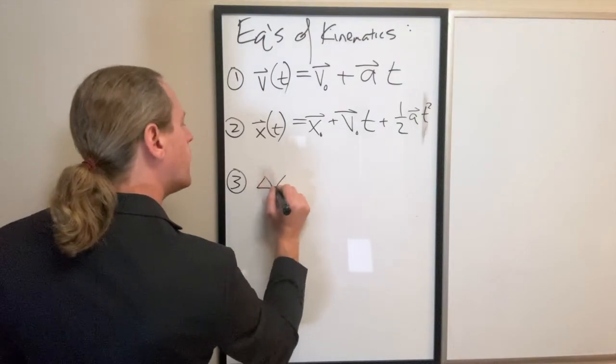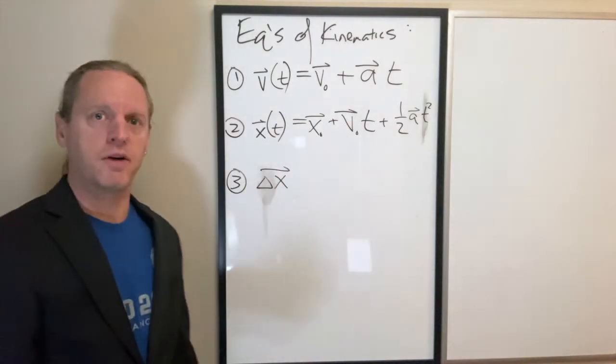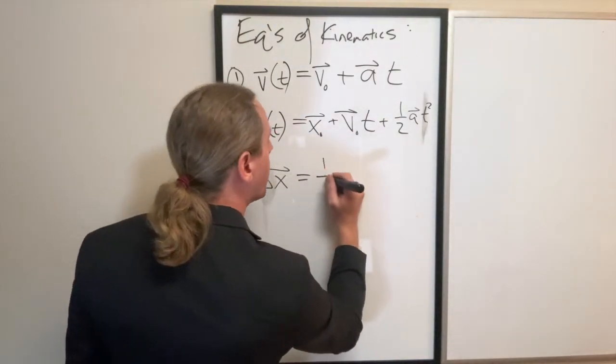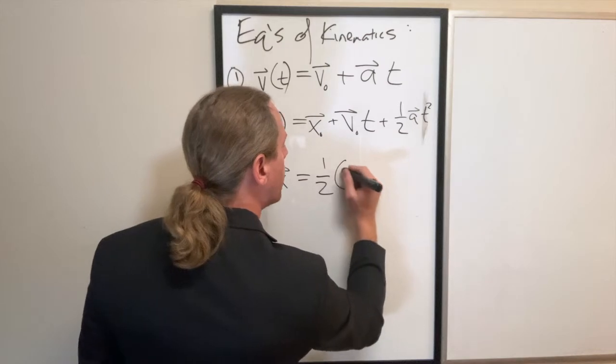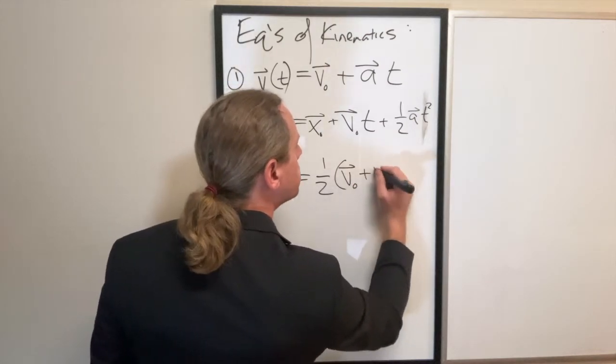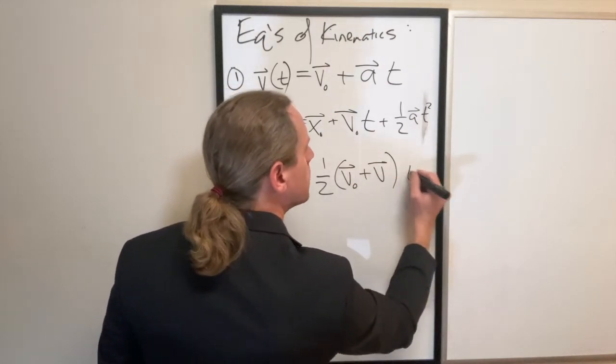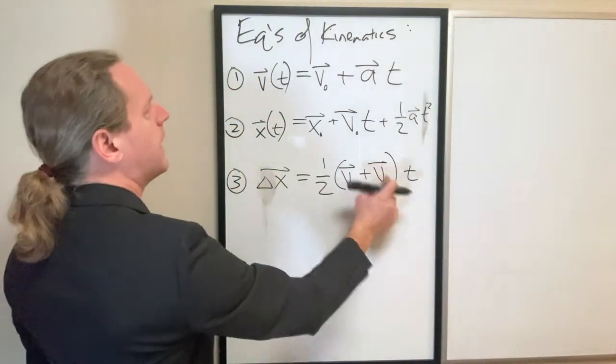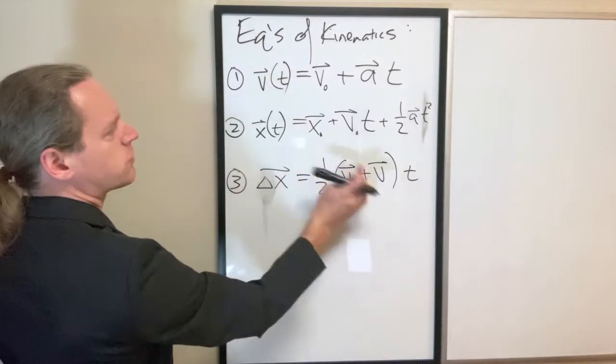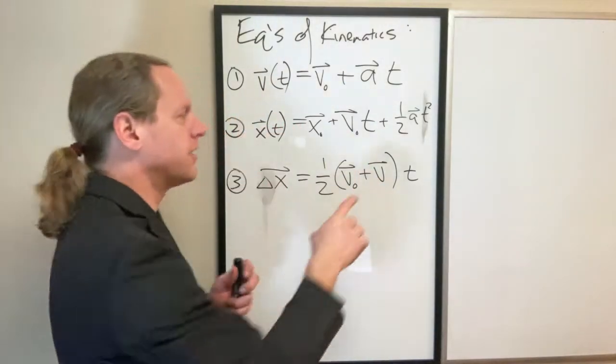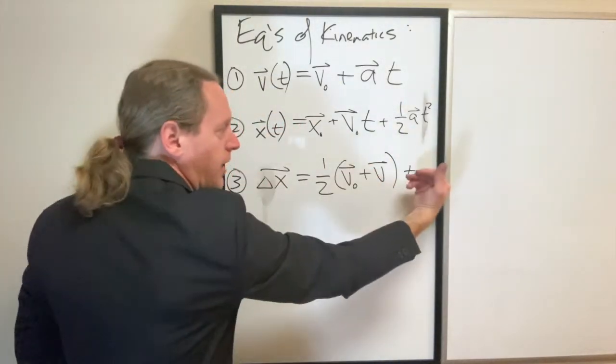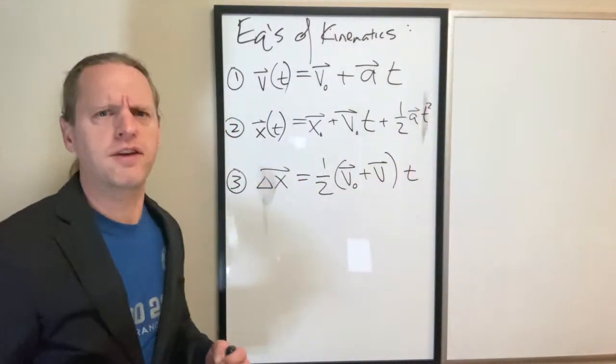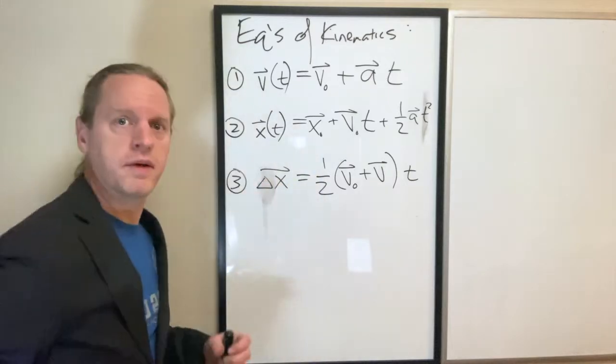So, the next equation here is a somewhat weird looking one. It says that the displacement undergone during some time interval, so x final minus x initial, for example, is going to be given as one half your initial velocity plus your final velocity times t. Now, when I don't have a subscript, what I mean by that is it's the same thing as that. I'm just not including the parenthesis t. It's a velocity evaluated at the final time at the end of the interval, not at the beginning time.